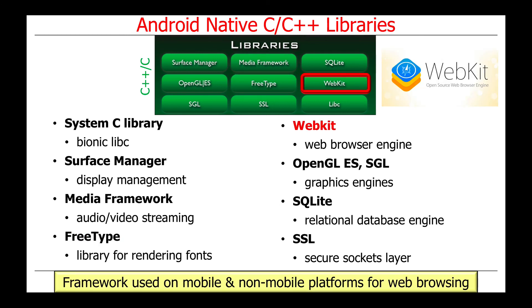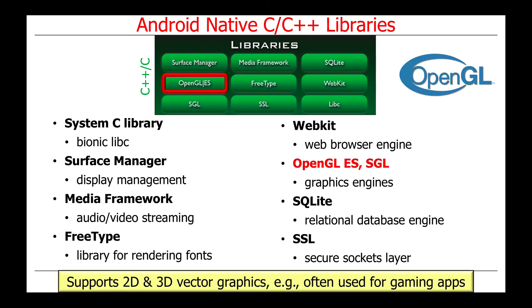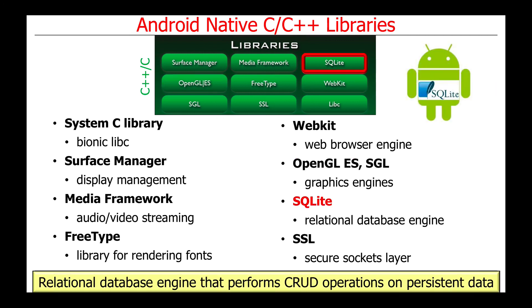FreeType is a library for rendering bitmap and vector fonts, avoiding the need to rewrite that complex functionality. WebKit is a widely used framework for web browsing on both mobile and non-mobile platforms, originally developed by Apple and used in iOS as well as Android. OpenGL is a popular framework for 2D and 3D vector graphics, often used for gaming applications. SQLite is a relational database engine implementing the SQL specification that performs CRUD operations — Create, Read, Update, and Delete — on persistent data, and is used by apps like email and MMS/SMS to store and query information.